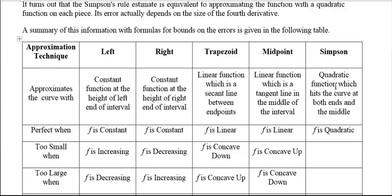The quadratic function that hits the curve at both ends and the middle would be Simpson's rule. So the left and right are perfect if it's constant. The trapezoid and midpoint are perfect if it's linear. And Simpson is perfect if it's quadratic.